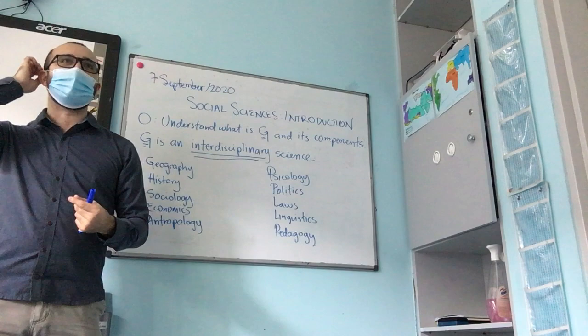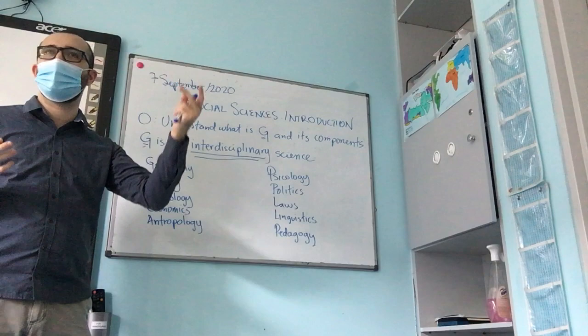The basic institutions are the family, the school, the state, and religion, but there are more. Normally we focus on the state — the constitution, the laws, etc. — as it is very important in our analysis.